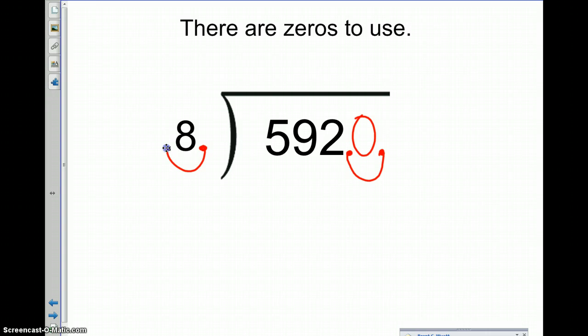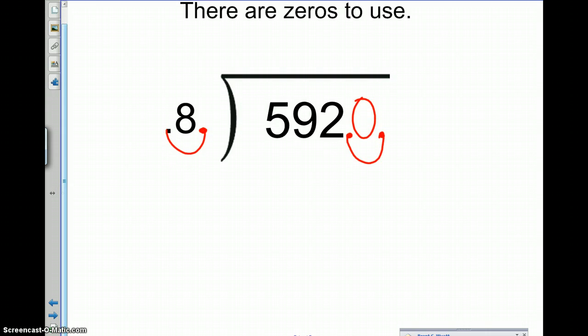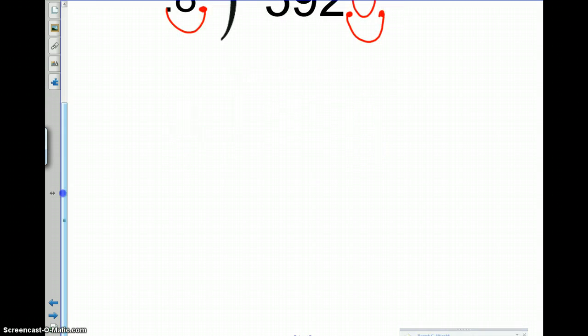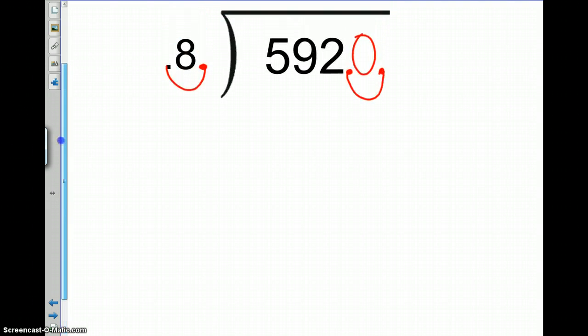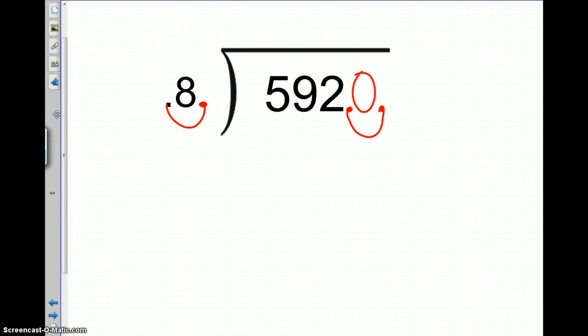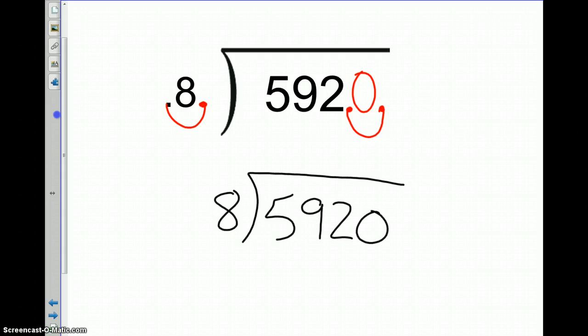I just wanted to remind you that there are zeros out there to use, even though you can't see them. So I would like to go through this just real quick. I want to rewrite the problem. So we have 8 as our divisor, and now we have 5,920 as our dividend.